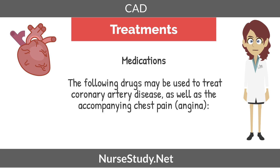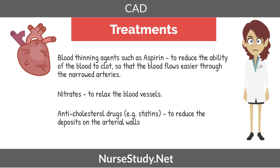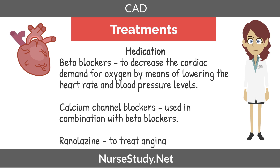Now we're going to move on to treatments for CAD. The following drugs may be used to treat coronary artery disease as well as the accompanying chest pain, also called angina. Blood thinning agents such as aspirin will reduce the ability of the blood to clot so that the blood flows easier through these narrowed arteries. Nitrates to relax the blood vessels. Anti-cholesterol drugs, also known as statins, to reduce the deposits on the arterial walls. Beta blockers decrease the cardiac demand for oxygen by means of lowering the heart rate and blood pressure. Calcium channel blockers are used in combination with beta blockers.